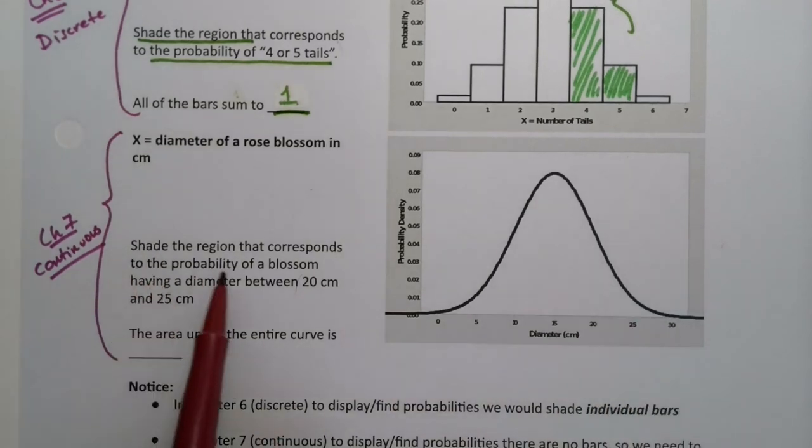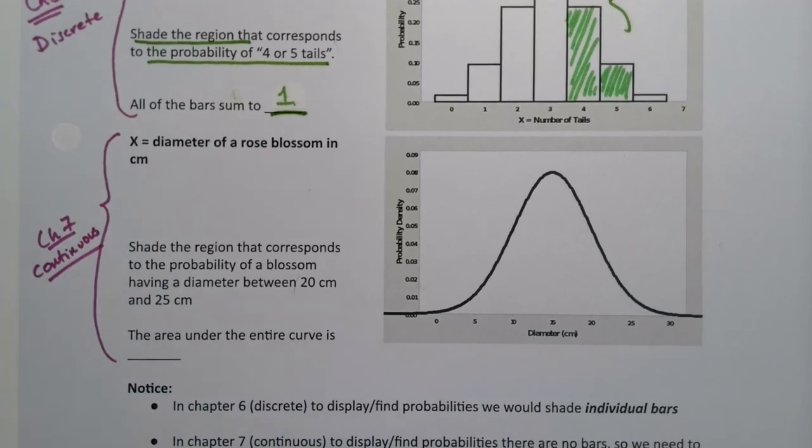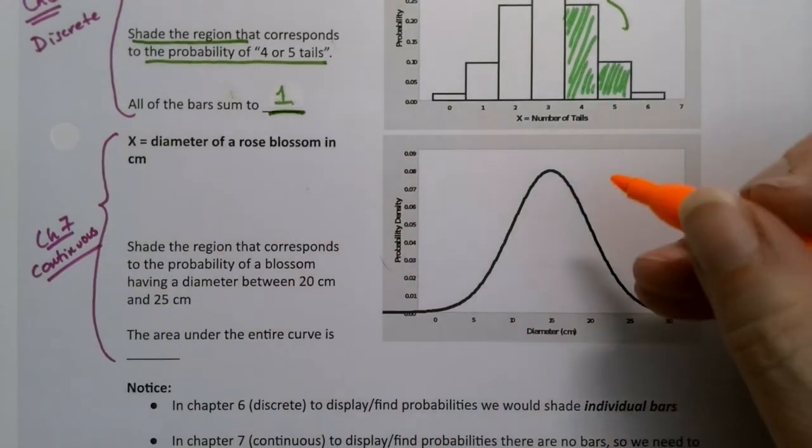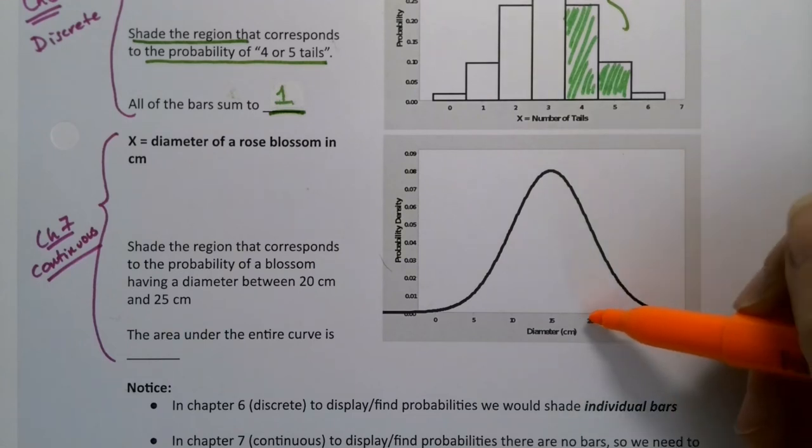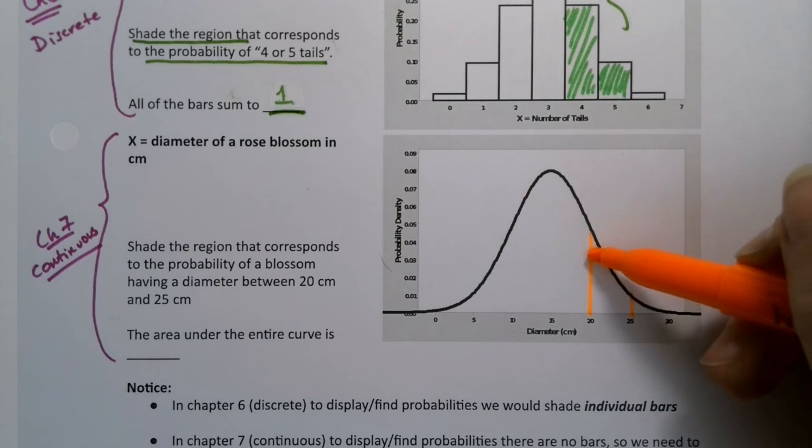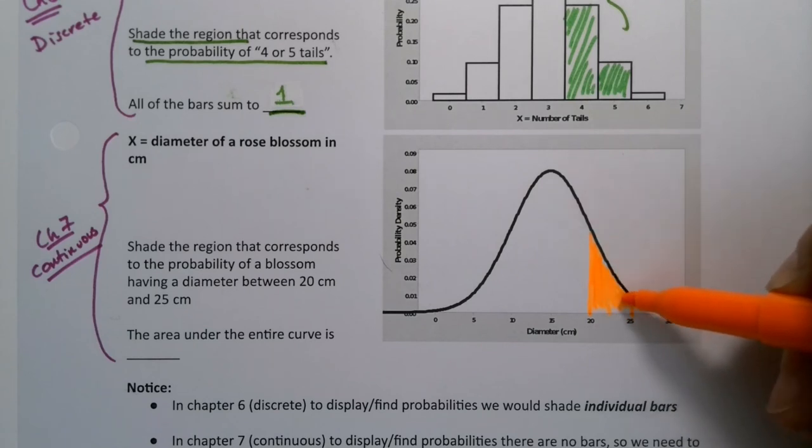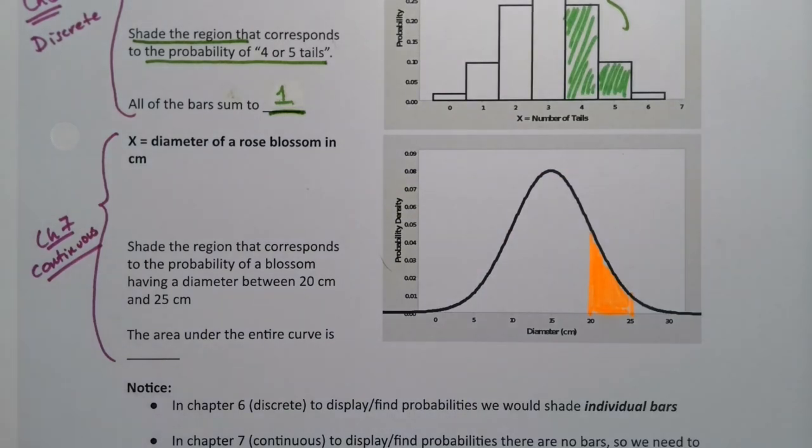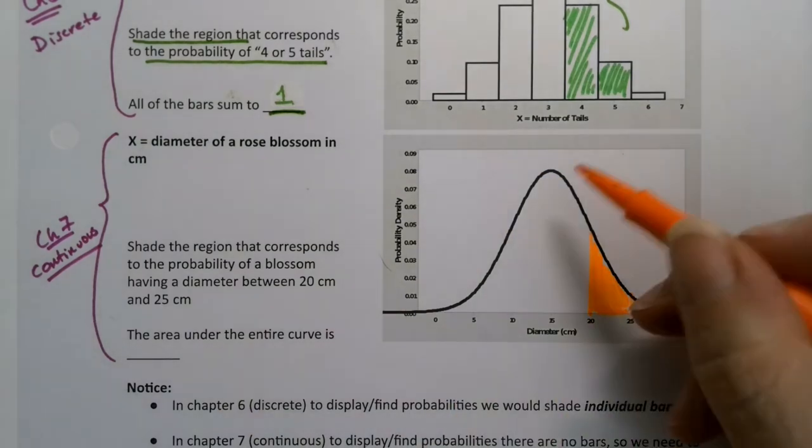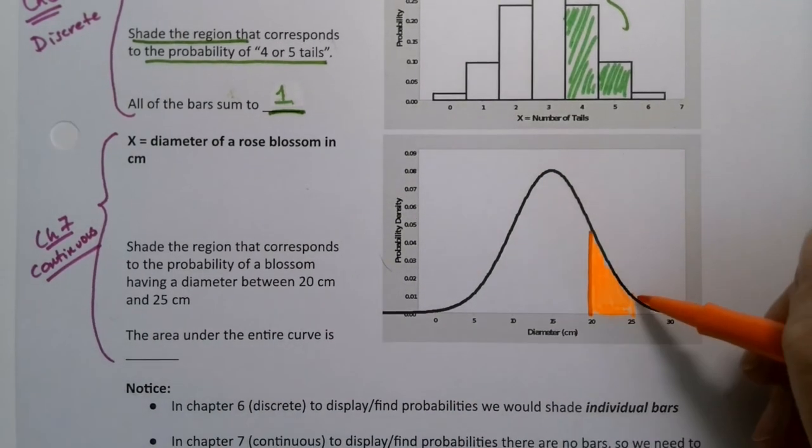They ask us to shade the region that corresponds to the probability of having a blossom between 20 cm and 25 cm. So 20 cm is right here, 25 cm is right here. What they're asking us to do is to find that area. That area will be that probability, with 20 over here, 25 over here.